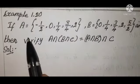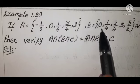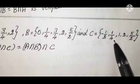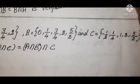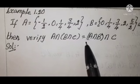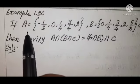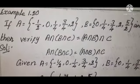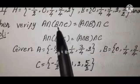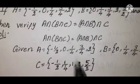Example 1.20: If A equals {-1/2, 0, 1/4, 3/4, 2}, B equals {0, 1/4, 3/4, 2, 5/2}, and C equals {-1/2, 1/4, 1, 2, 5/2}, then verify A intersection (B intersection C) equals (A intersection B) intersection C. First, write the given sets A, B, and C. Then verify by finding the bracket B intersection C first.